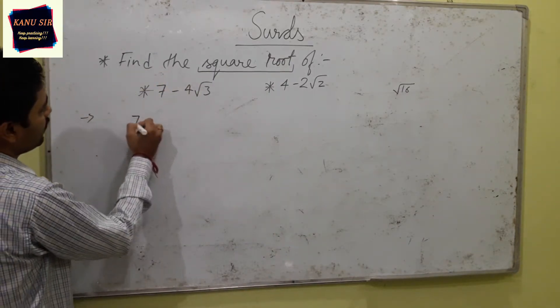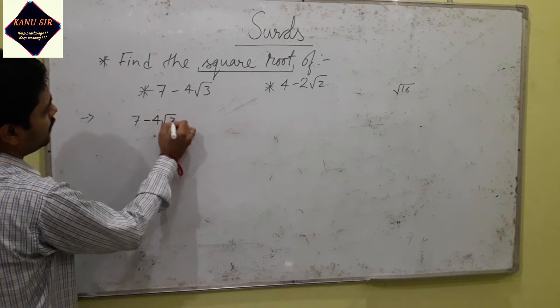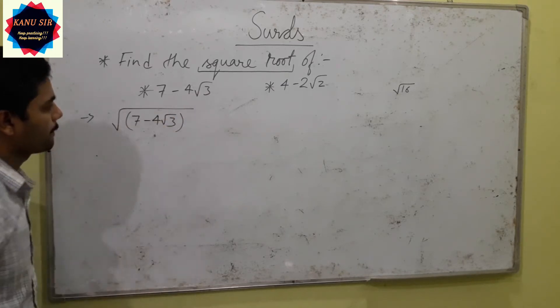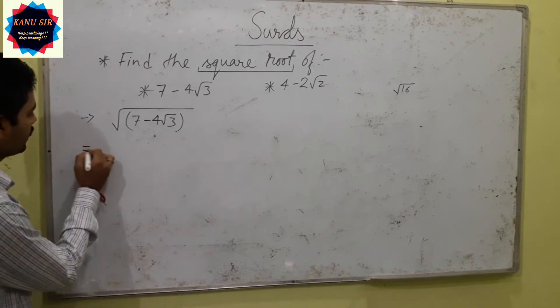It means 7 minus 4 root 3, and the square root of this whole term. How can we do it? Let's check.